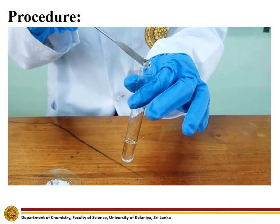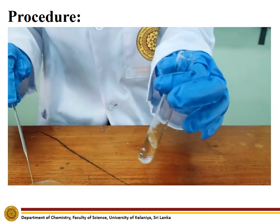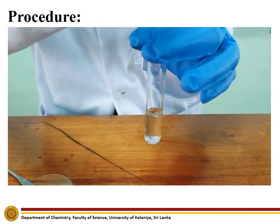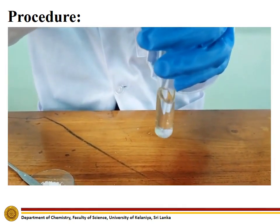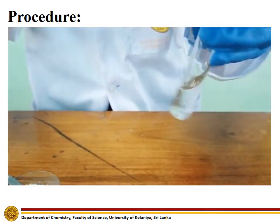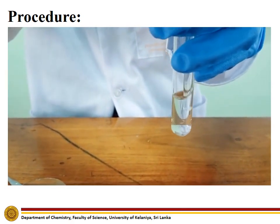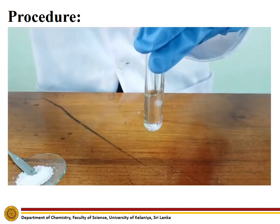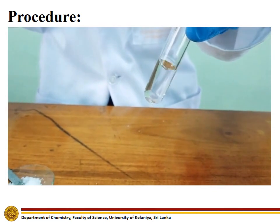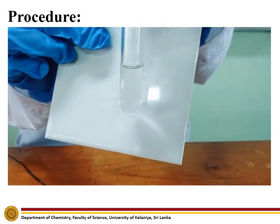To carry out the second experiment, add benzoic acid to a test tube containing dilute sodium hydroxide and observe whether a clear solution is obtained. After benzoic acid is dissolved completely, a clear solution can be seen.